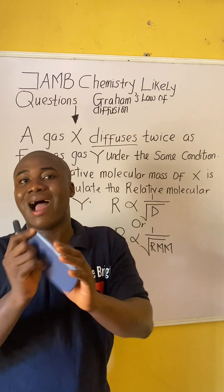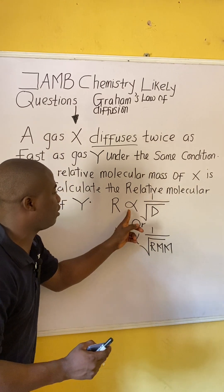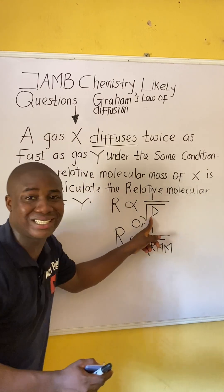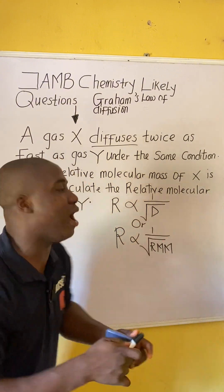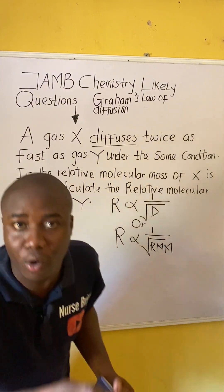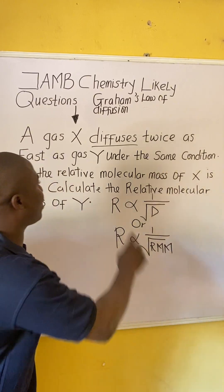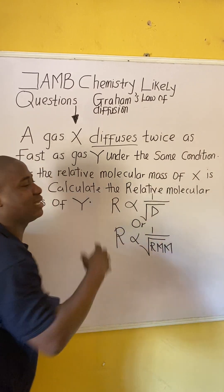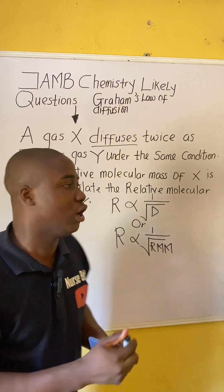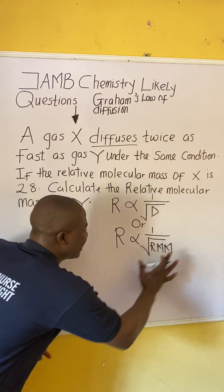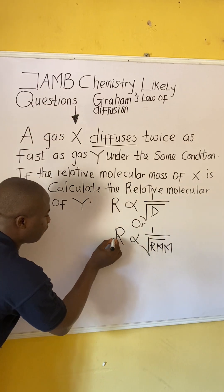The rate of diffusion relates to two parameters: density and relative molecular mass. In this question they don't mention density, so we won't use that version. Because the question mentions relative molecular mass, we are going to use the RMM formula. Based on this mathematical expression from the law, we can derive a working formula.